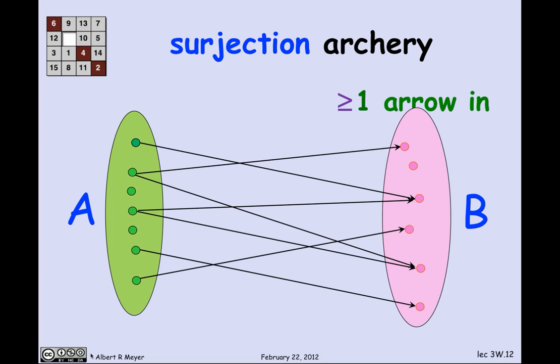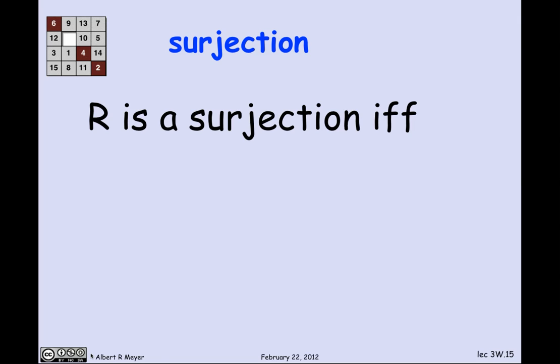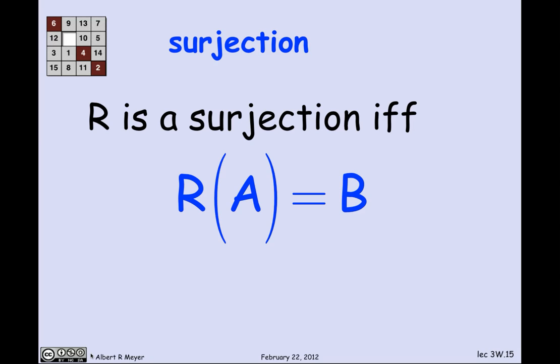The next concept is a surjection — a relation where there is at least one arrow into every point in the codomain. In the picture, there's one bad codomain point in red with no arrow in. After removing it, we have a surjective relation where everything in B has at least one arrow coming in. We can express this set-theoretically: R is a surjection if and only if the image of the domain equals the codomain — equivalently, the range of the function is its entire codomain.